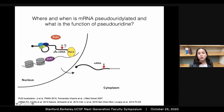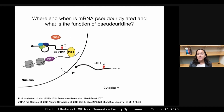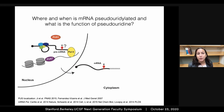Two of the pseudouridine synthases that I just discussed were known to be nuclear or chromatin associated. So I hypothesized that pseudouridine was added to nascent pre-messenger RNA co-transcriptionally, where it could then go on to affect any step of the messenger RNA life cycle.